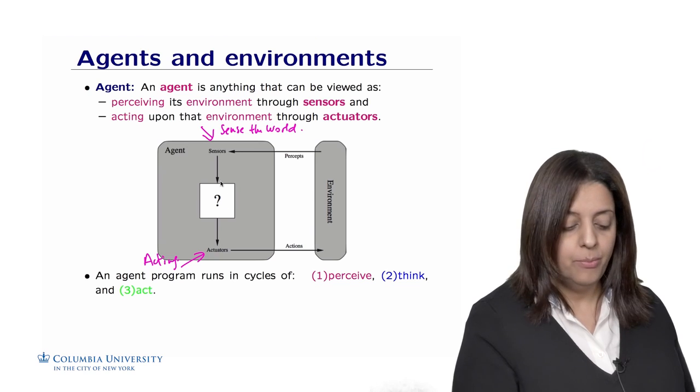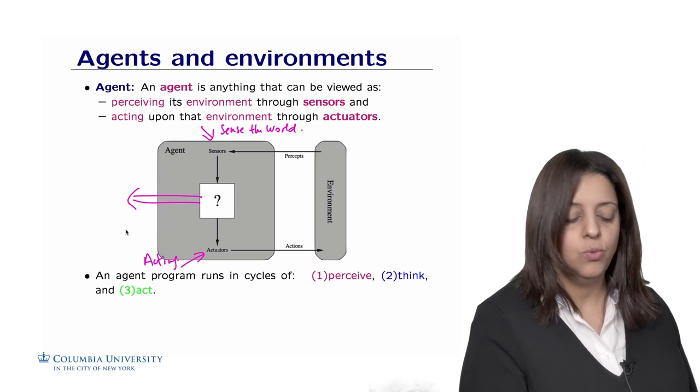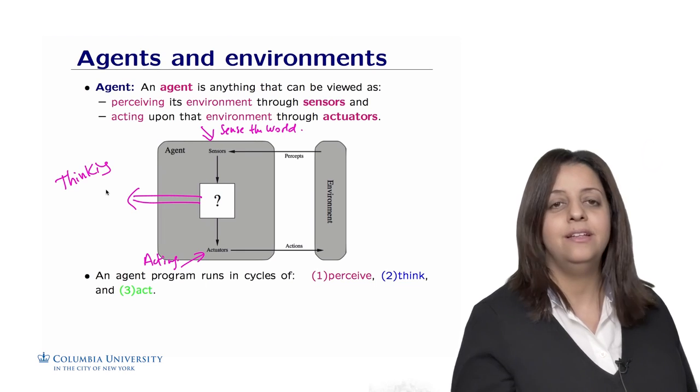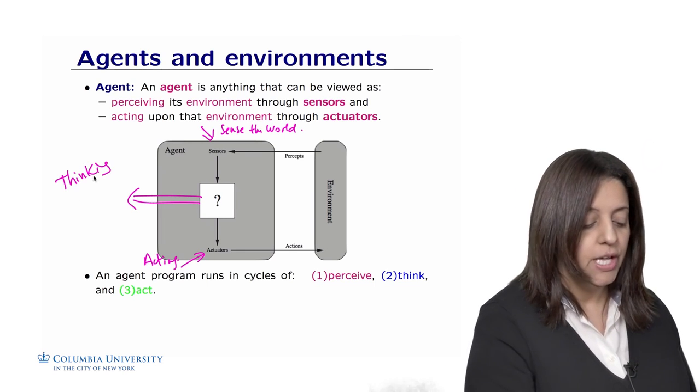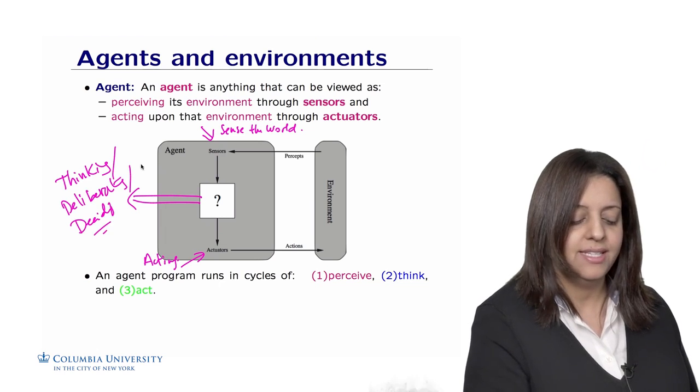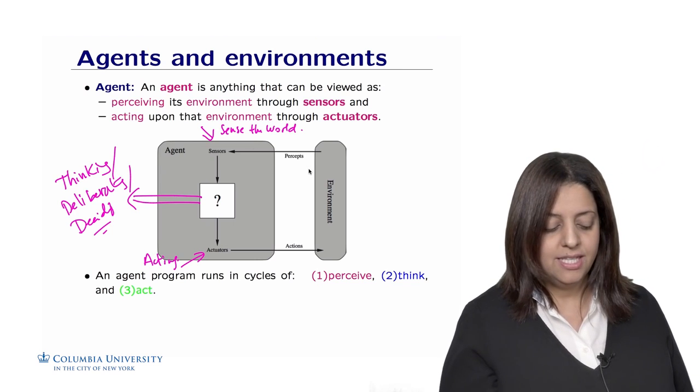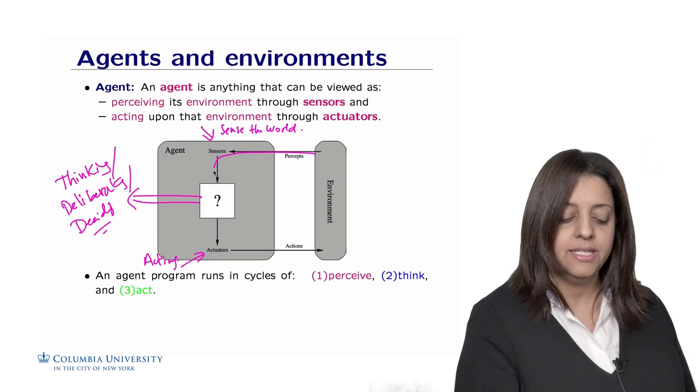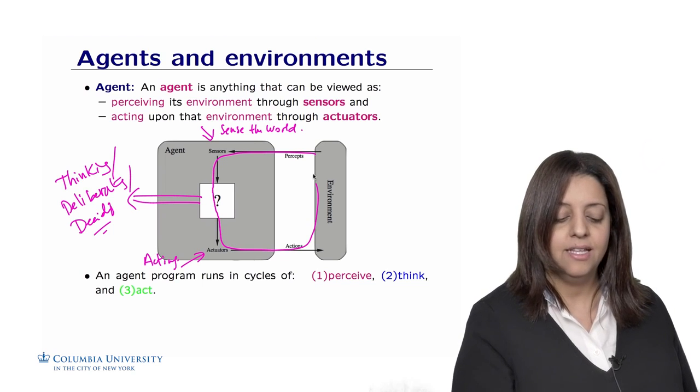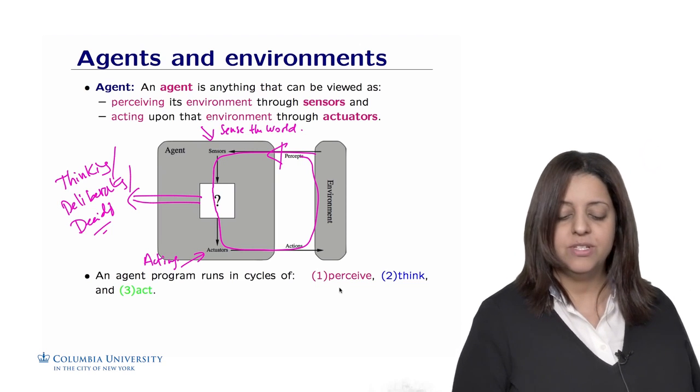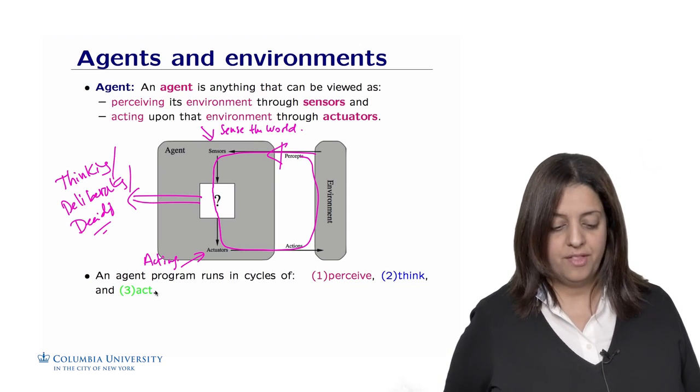In the middle, you have a part in which the agent will do thinking and deliberating. Here, the agent, given what it observed or sensed from the world, will be thinking, deliberating, or deciding what to do based on what it senses. So in general, you could see that as a cycle for the agent in which it perceives the environment, decides, thinks what to do, acts, and so on. So we have a kind of loop or cycle happening here of perception, thinking, and acting upon that environment.